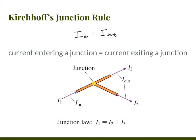If you look at this picture here, you see currents going in and out. The current in is just I1, and that equals the current out, which is I2 and I3 added together. We use the junction rule to determine the relationship between currents using conservation of current.